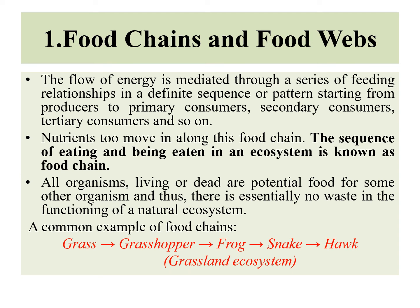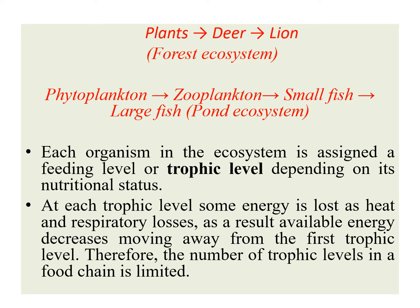An example of a common food chain is grass being eaten by a grasshopper, which is being eaten by a frog. The frog is being eaten by a snake, which is subsequently being devoured by a hawk. This is an example of a grassland ecosystem. Similarly, in a pond ecosystem, the basis is formed by phytoplanktons, which are eaten by zooplanktons, and successively it goes on till the largest fish has devoured its prey. Each level of a food chain is known as a trophic level.